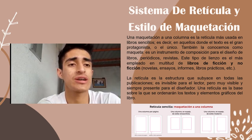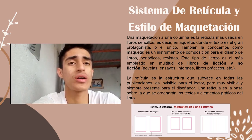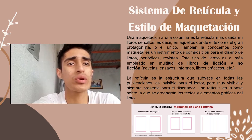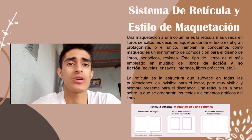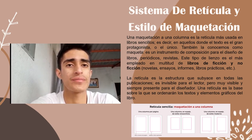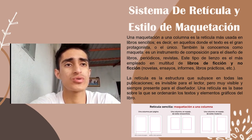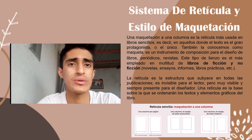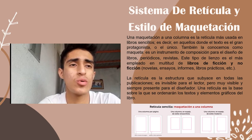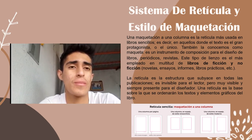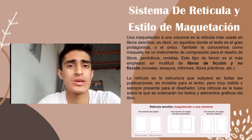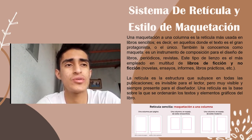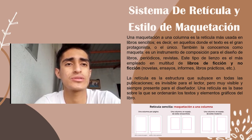Es importante que una retícula de una columna no se aprecie como un ladrillo de texto, pesado e incómodo de leer. Por eso, este tipo de composición suele encontrarse en libros que miden 17 por 24 centímetros o menos. Un tamaño de libro mayor obligaría a aumentar el cuerpo de letra o bien a hacer la columna más delgada y jugar con los blancos, siempre que el tamaño del texto sea lo suficientemente grande para soportar una cantidad de caracteres adecuada por línea.